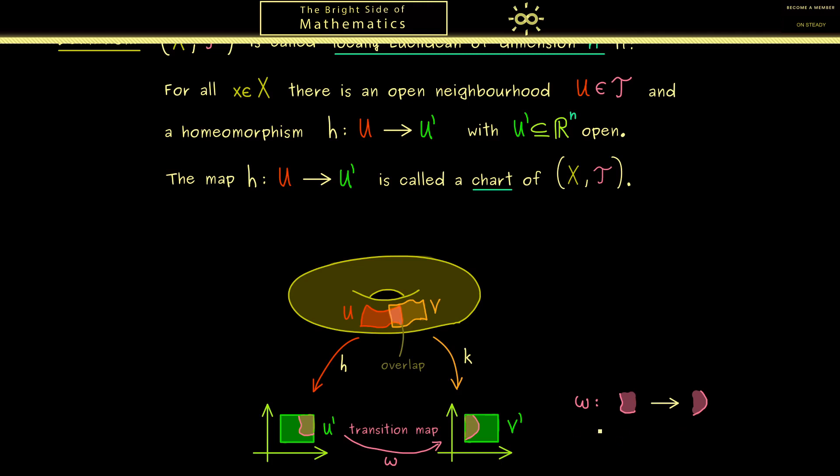Therefore, for this map omega we can use our normal calculation rules in R^n. And for example, for this map we can ask if it's differentiable. So you should see the notion of differentiability didn't make sense for the maps h and k in this abstract formulation here. However, now for this transition map it makes sense. And indeed, this is what we need to do to get more structure on the manifold.